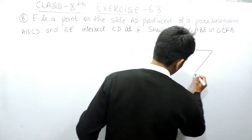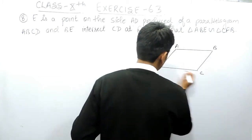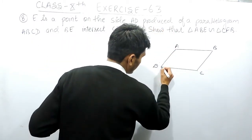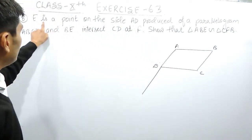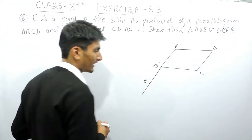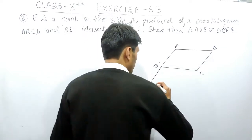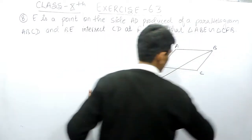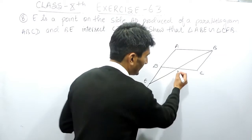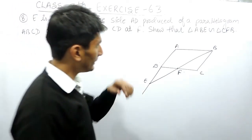So here ABCD is a parallelogram — this is A, B, C, and this is D. If AD is produced, E is the point on this side, so here is point E on this produced line. Now if I join BE, this intersects CD at point F.